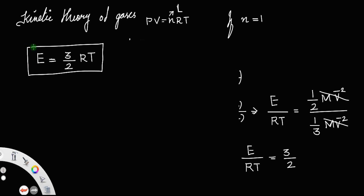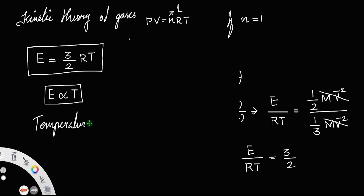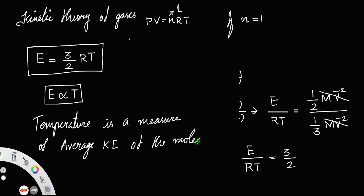The average kinetic energy of one mole of gas is E = (3/2)RT. Since 3/2 and R are constants, E is proportional to T. That is why we say temperature is a measure of the average kinetic energy of the molecules — higher kinetic energy means higher temperature.